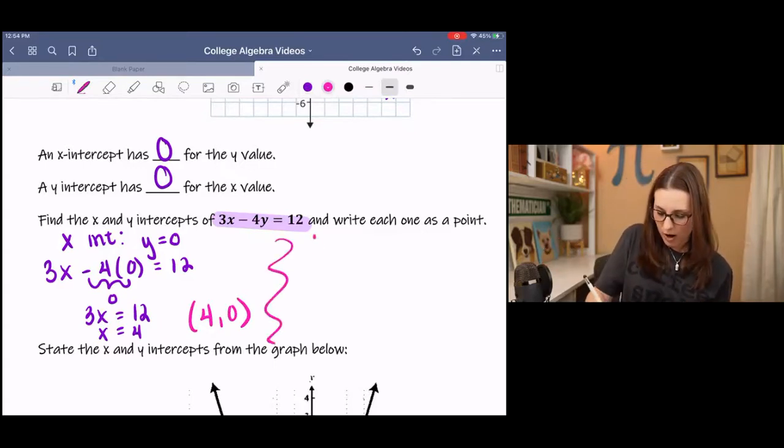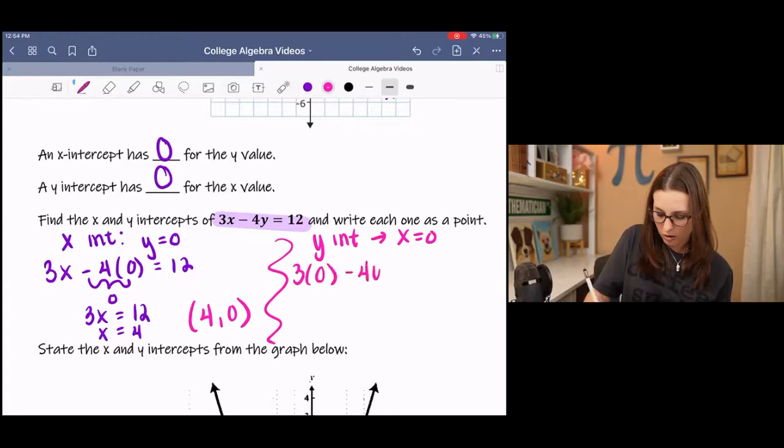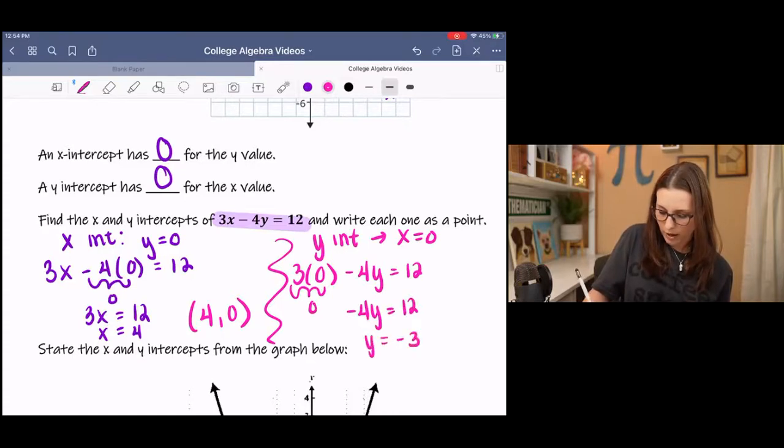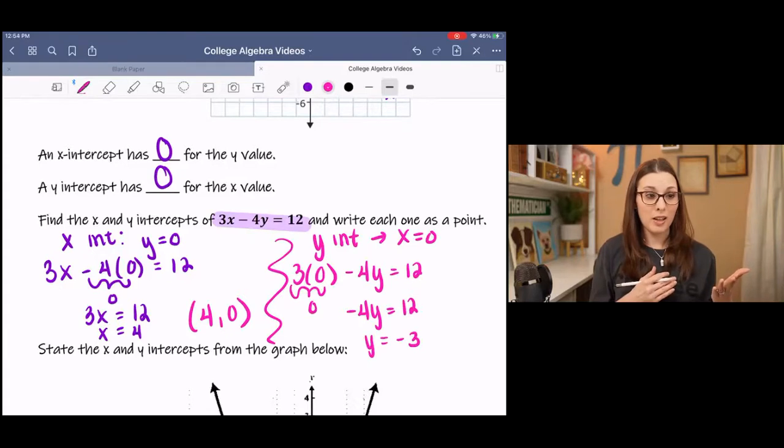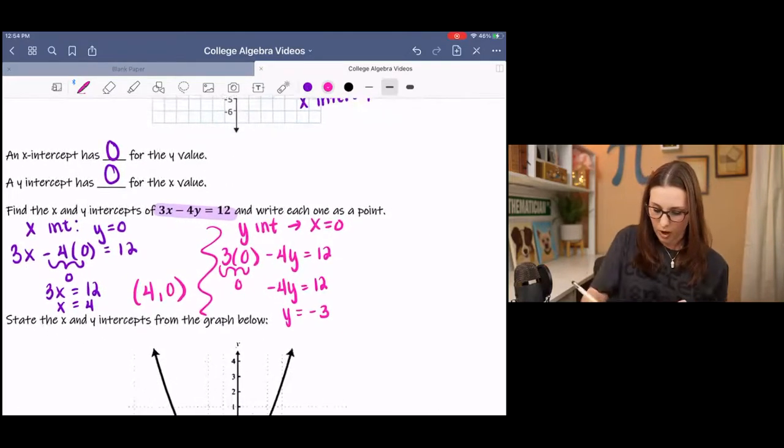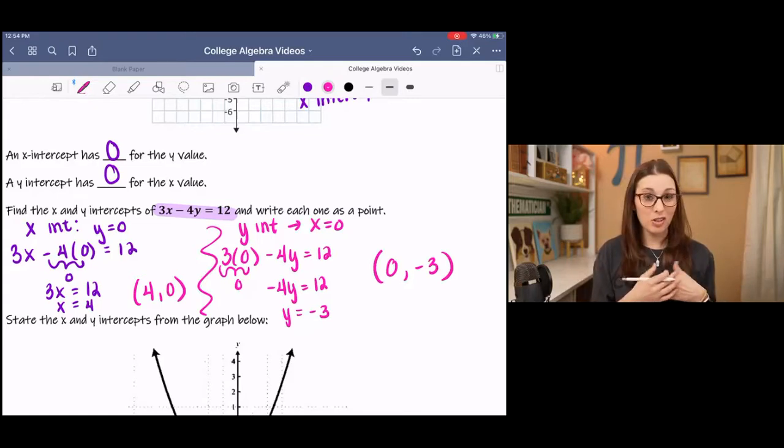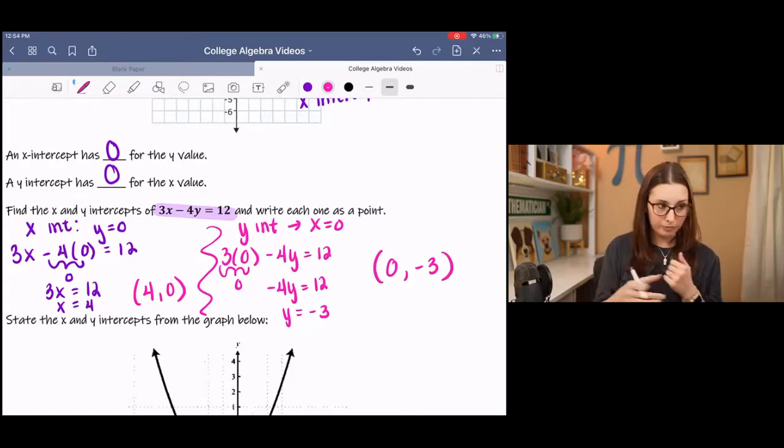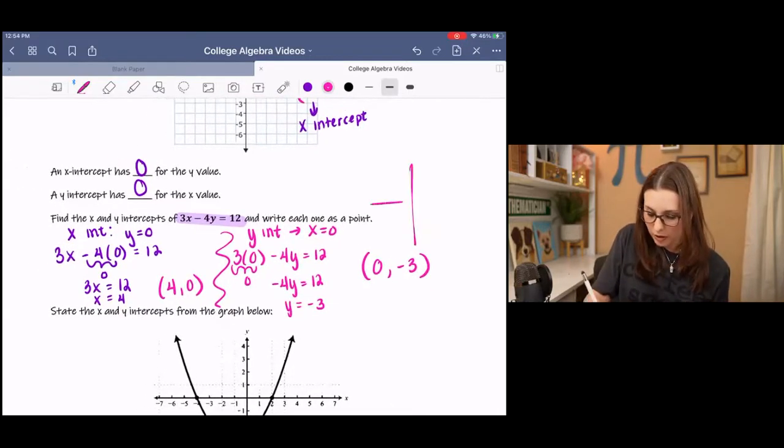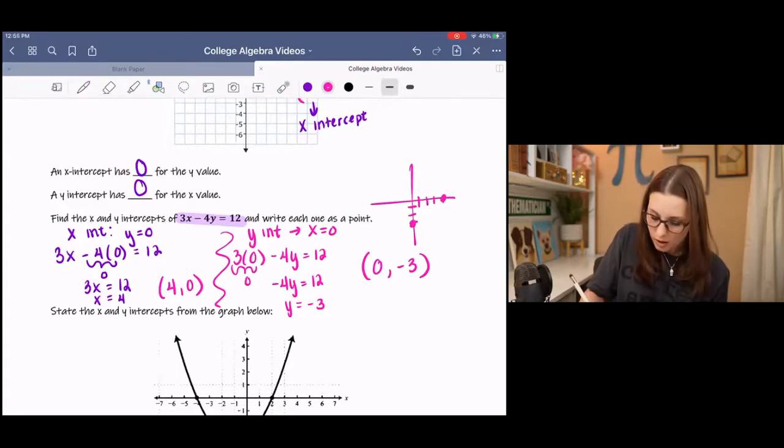And then we can do the same process with the y-intercept. We know x has to equal 0, so we can sub that in. Anything times 0 is 0. So we're left with this. We solve for y, and we get negative 3. And now we have an x-coordinate and a y-coordinate, and we can write our point as x, y. And then at this point, you can actually graph it pretty easily. If we just sketched a graph, then I would go 0, negative 3, and 4, 0. And then draw my line.